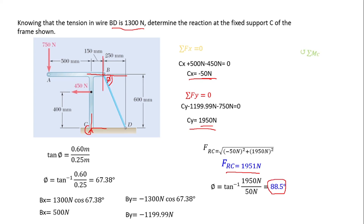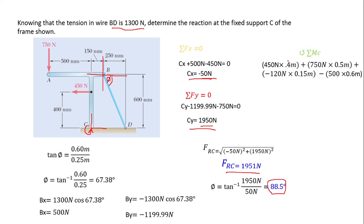Since this is a fixed support, we also need to find the moment. We create the moment at C — that is, we find the sum of moments at C. I'm choosing the anticlockwise direction to be positive. The 450-newton force is moving vertically and creates an anticlockwise moment at C with a distance of 0.4 meters.